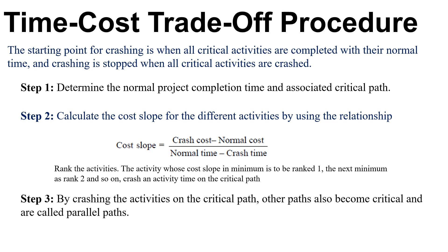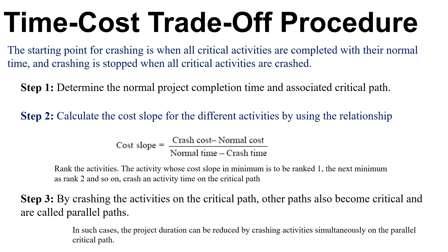The third step is that by crashing the activities on the critical path, other paths also become critical and are called parallel paths. This means during the crashing of a critical path, the duration of the project will be reduced and become equal to another path's duration. In such cases, the project duration can be reduced by crashing activities on the critical path as well as on the parallel path.